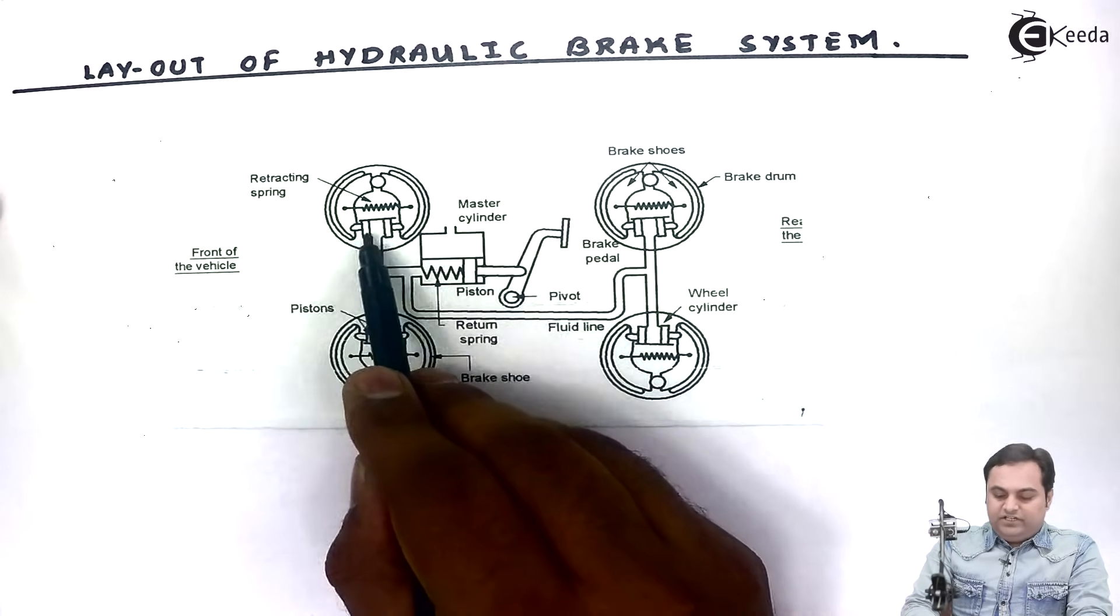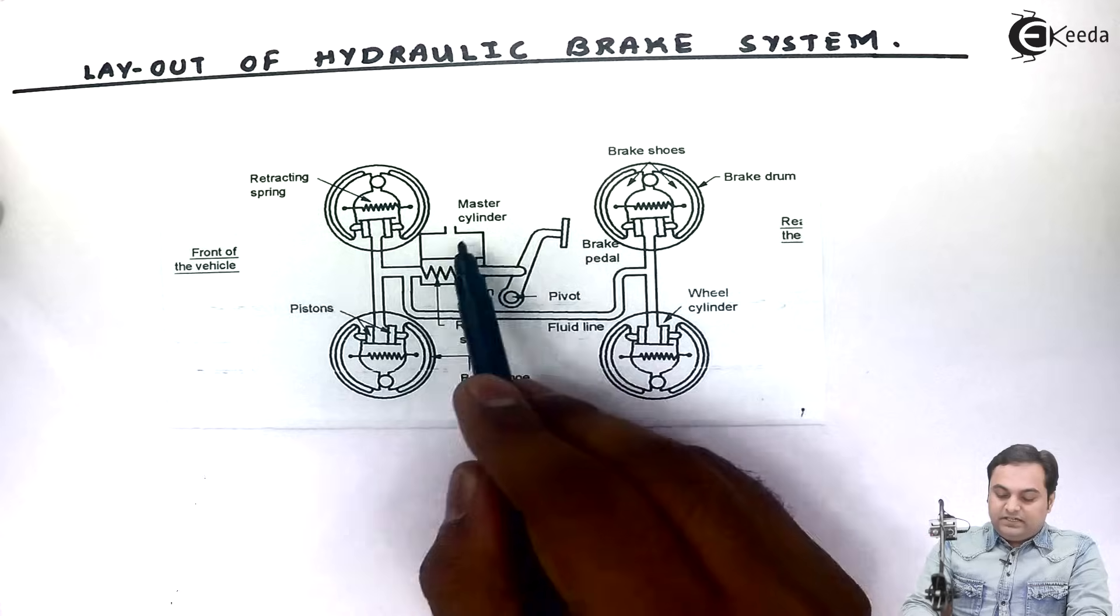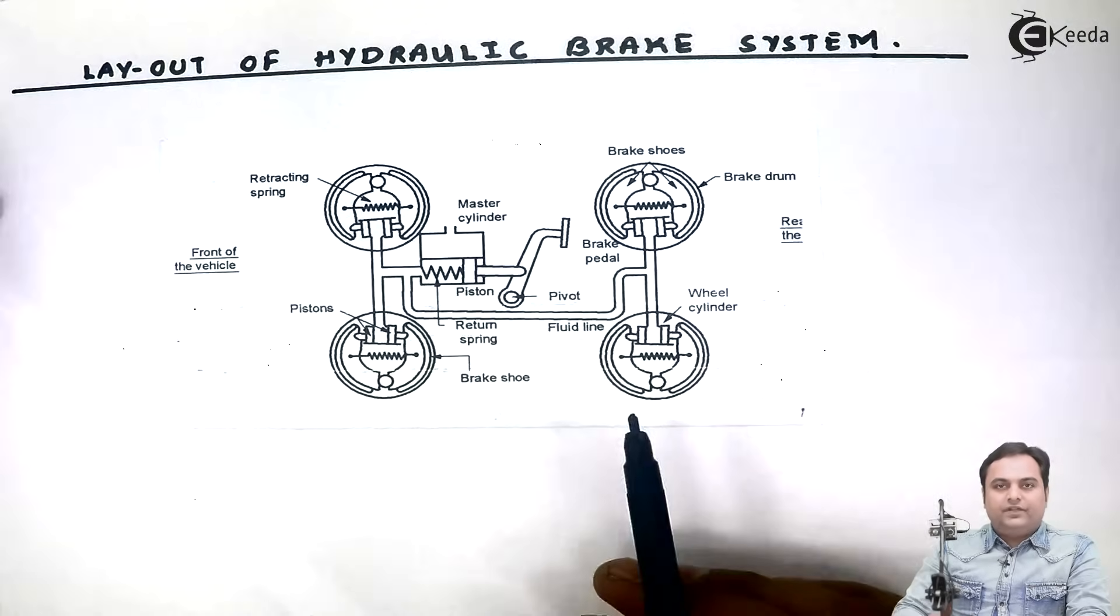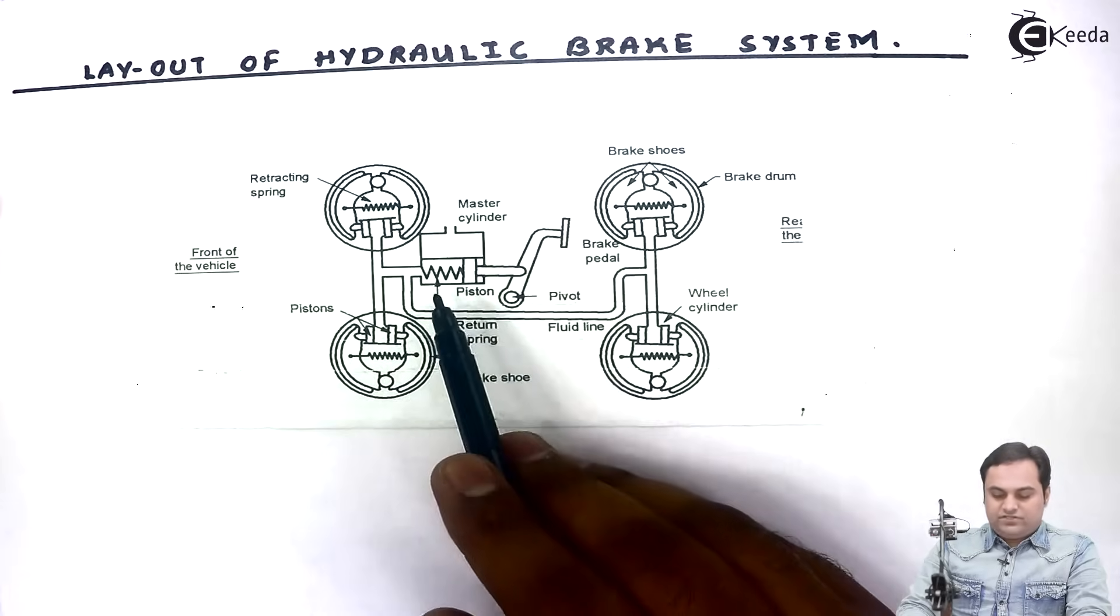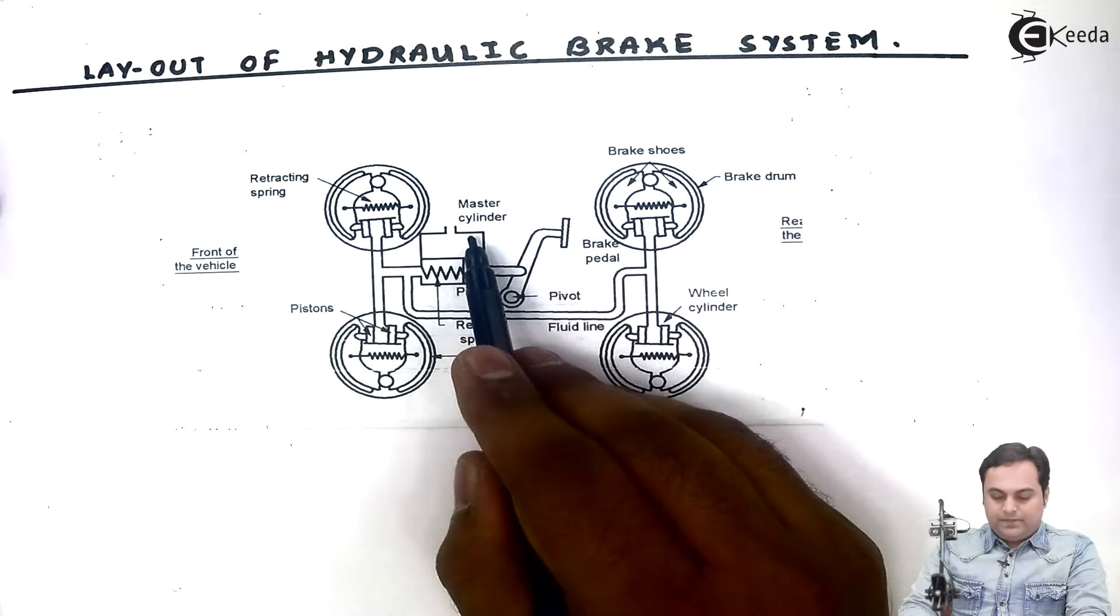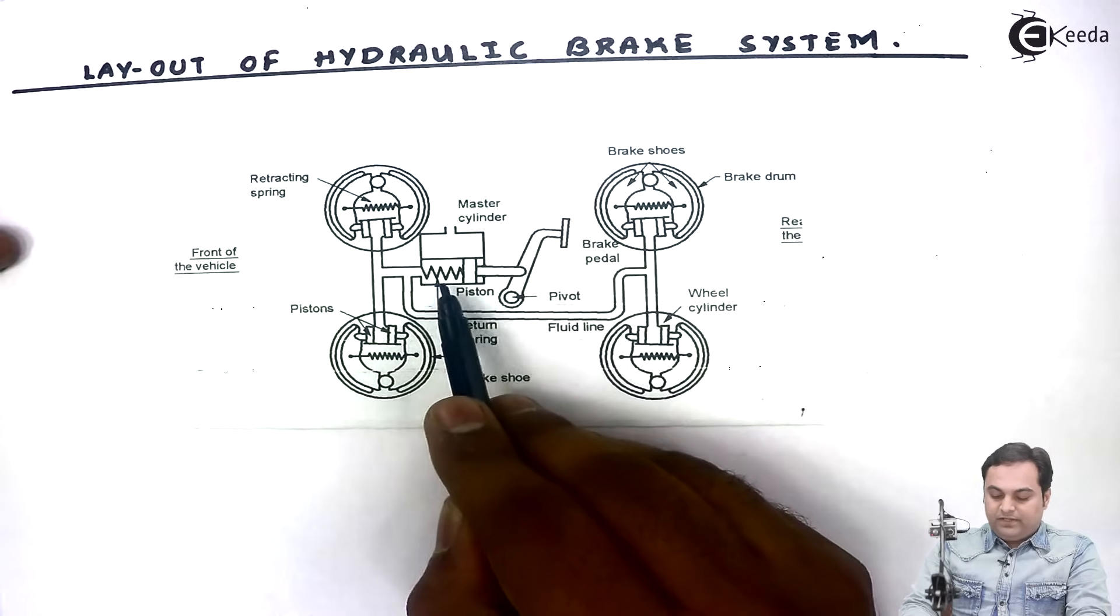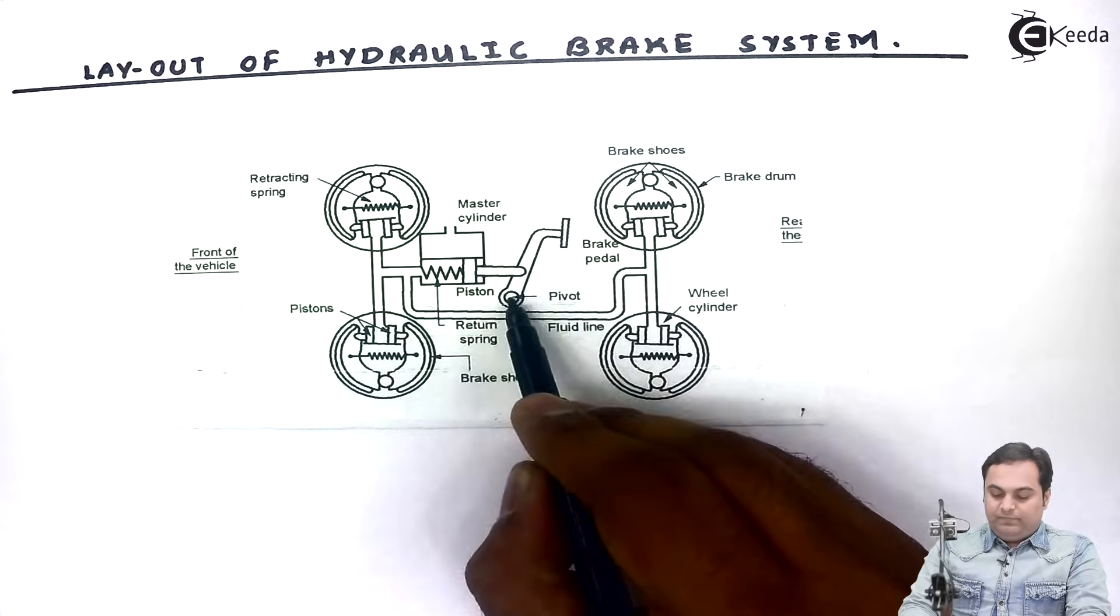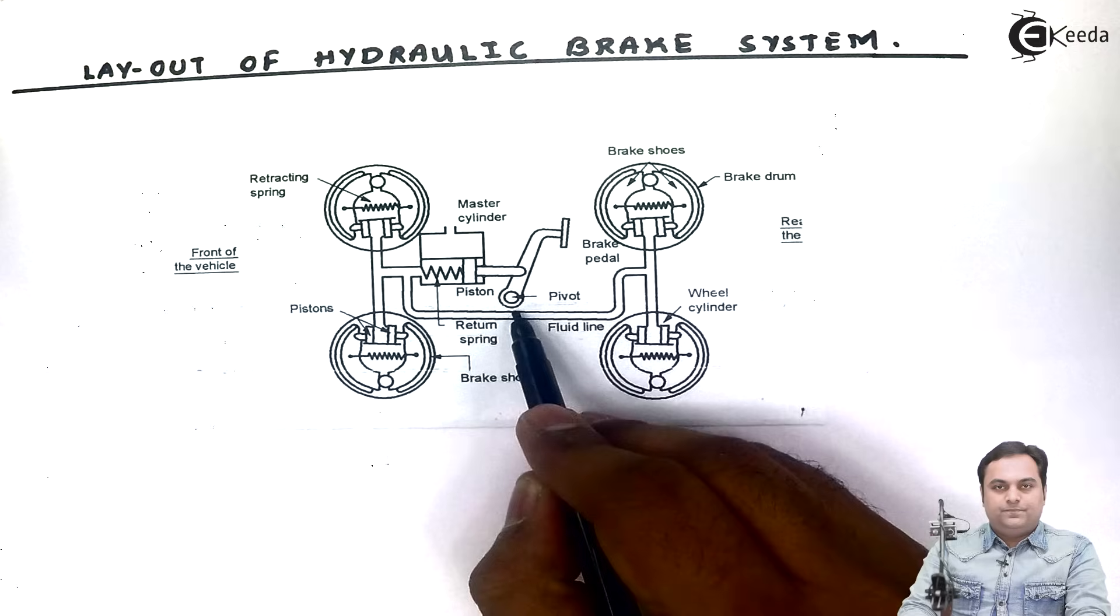Next, as we can see here, the piston and cylinder arrangement is provided in each of the internal expanding brakes, and that is connected to a master cylinder. Looking into the construction of the hydraulic brake system, it consists of a master cylinder inside which we have piston and spring. This master cylinder is actuated with the help of a brake paddle. The brake paddle moves about this pivot.